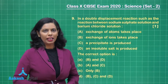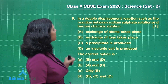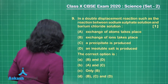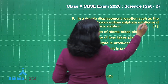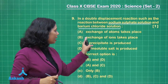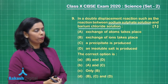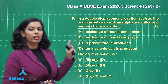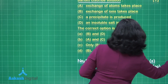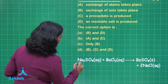Now the turn is for question number 9. Question number 9 says: in a double displacement reaction, such as the reaction between sodium sulfate solution and barium chloride solution — we have two salts here whose solutions we have. You need to check what is true among the given statements and on that basis choose the correct option. Let's have a look at this particular reaction — sodium sulfate is reacting with barium chloride.